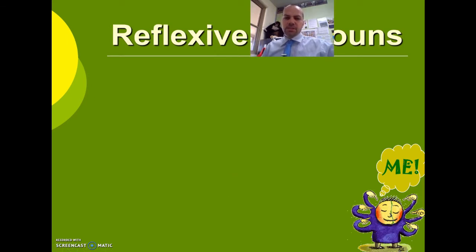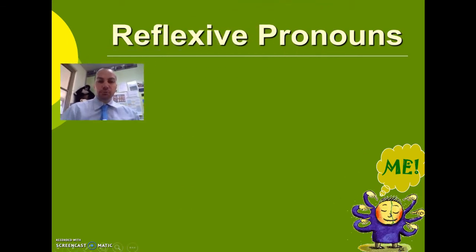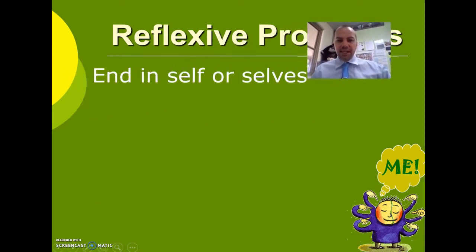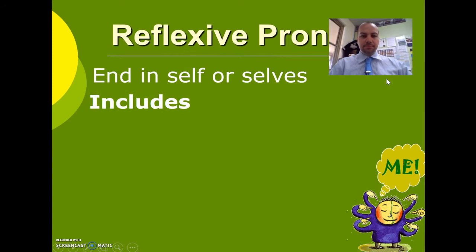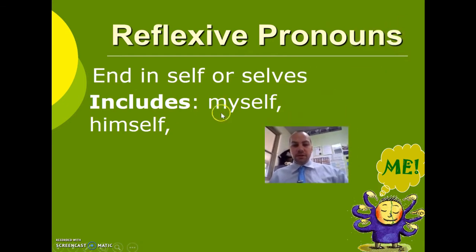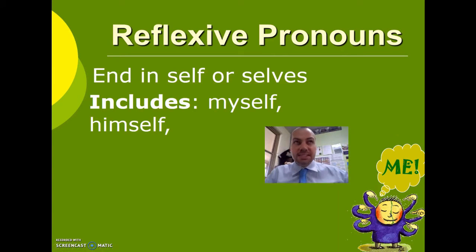Today we're going to be looking at something new — so that was just a bit of revision. Today we're looking at reflexive pronouns. Reflexive pronouns end in 'self' or 'selves.' Can you start to think of some examples? These might include myself, himself. I'm going to pause the video now to see if you can think of what other reflexive pronouns there would be. There are some that are singular and some that are plural.